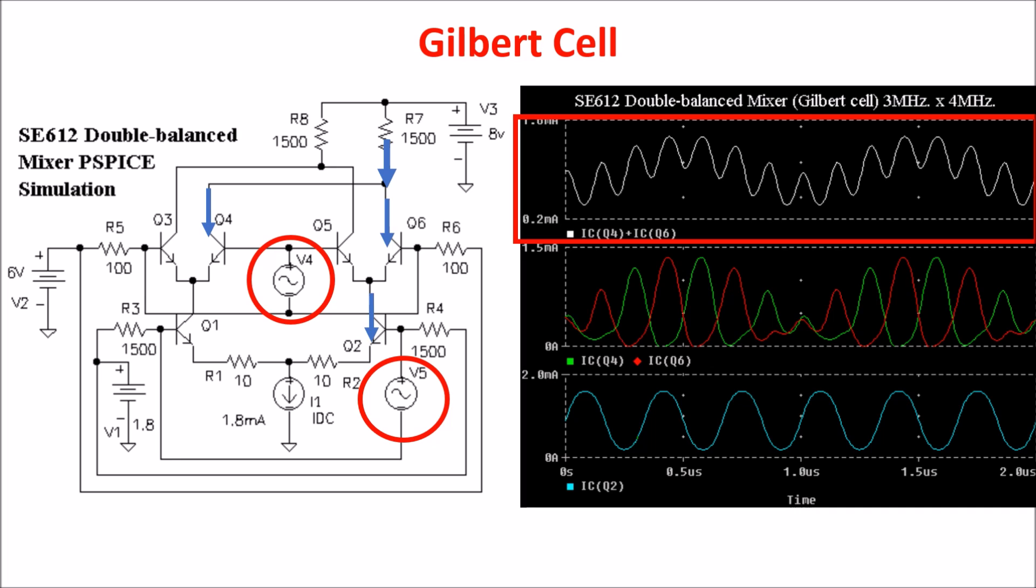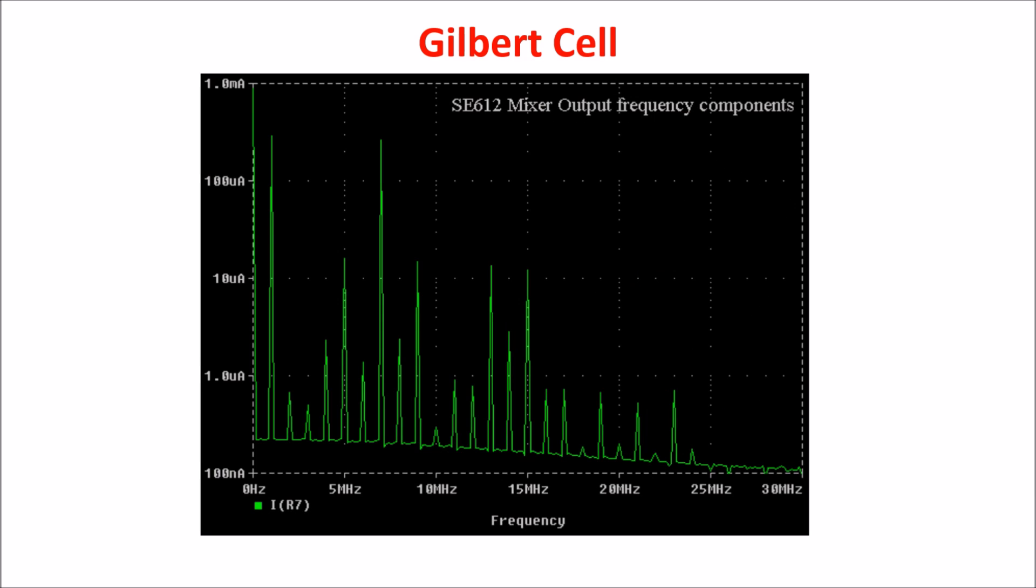The other output would appear similar but out of phase. These output currents are translated directly into voltages by the 1500 Ohm collector load resistors. Here we see the Fourier transformation of the output, showing the amplitude of any and all frequency components. The 7 MHz and 1 MHz signals are the biggest, but there is a murmuring mass of other frequencies too, so we need to filter the 7 MHz component.